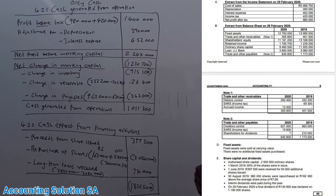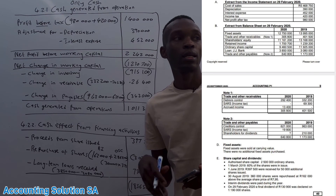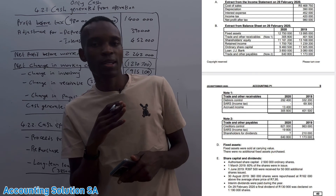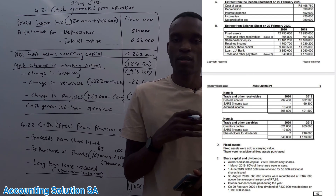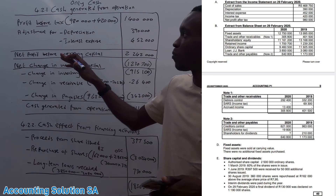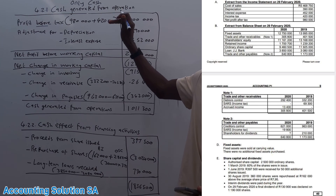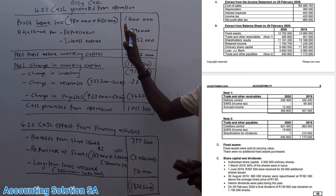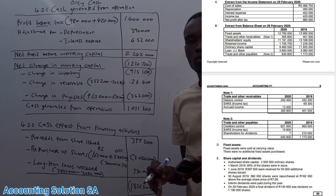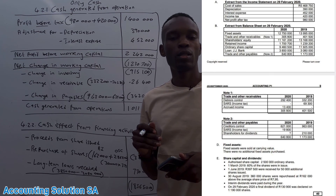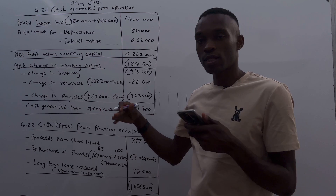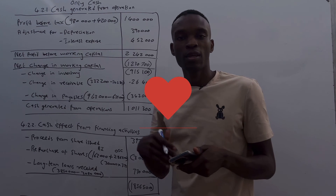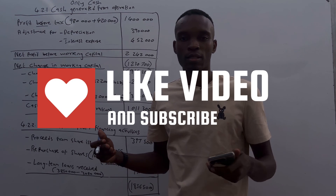That's how you handle the effect from financing activities. I hope you've liked and subscribed. Comment and let me know — is it difficult to prepare cash generated from operations? I think it's manageable because most amounts come directly from the income statement and balance sheet. See you in the next one.